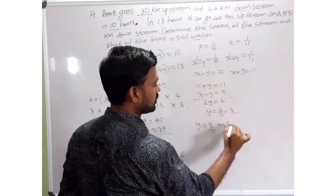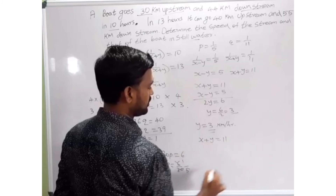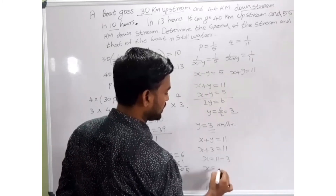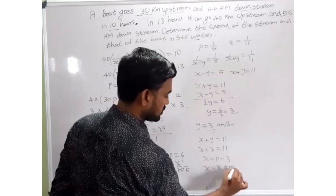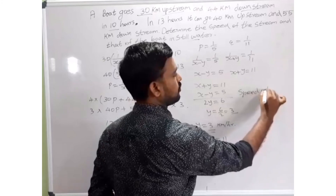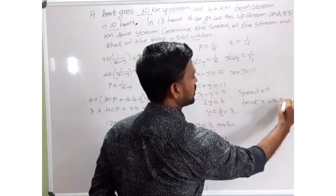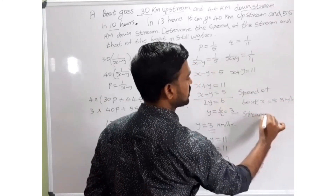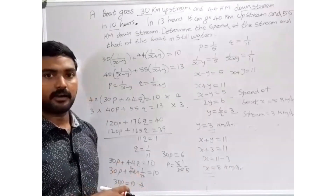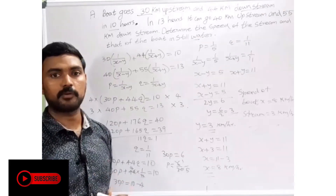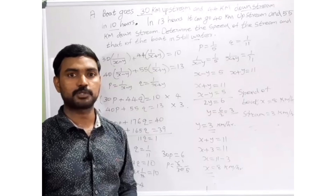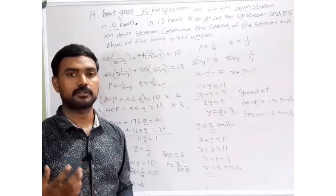Using x + y = 11 and y = 3: x + 3 = 11, so x = 11 - 3 = 8. Therefore, the speed of the boat is x = 8 km/h and the speed of the stream is y = 3 km/h. Watch this problem again to get a clear idea. If you subscribe to the channel H2S Educators, it will help you solve any difficult problems. You can also comment your doubts or questions. Thank you.